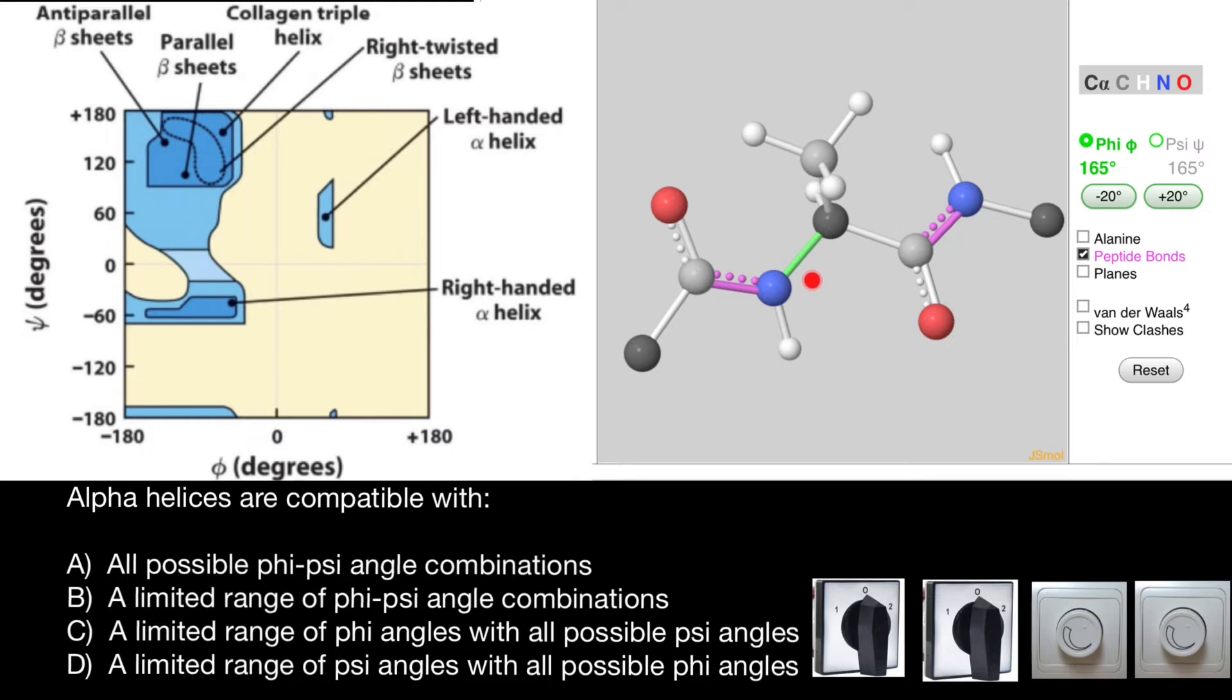They can rotate only around these torsion angles. We call phi the torsional angle between central alpha carbon and amino group, and psi the torsional angle between central alpha carbon and carboxylic group.